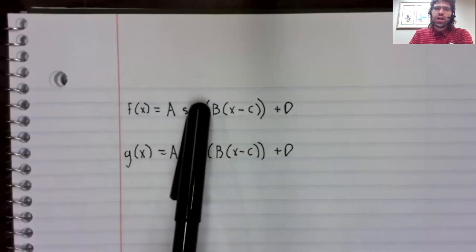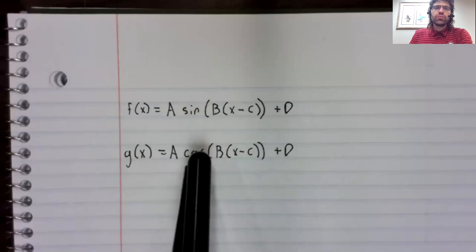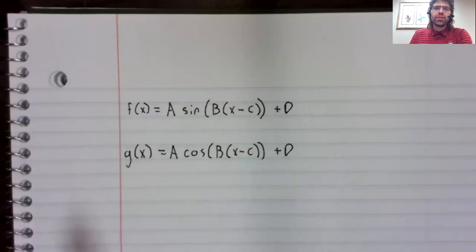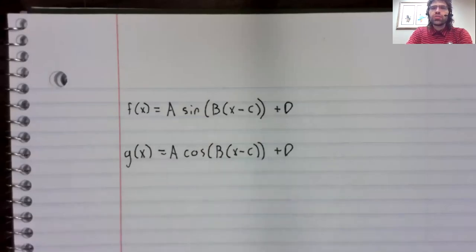You can use the sine, or you can use the cosine. Just as the graphs of the sine and the cosine look the same, they're just horizontal shifts of each other.